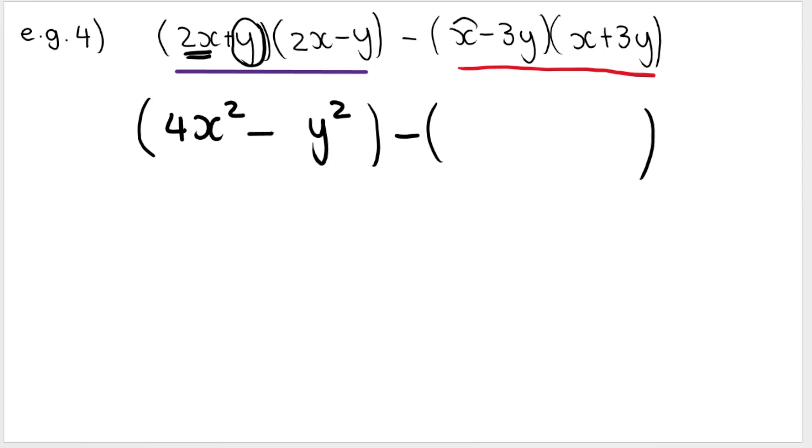Same thing over here. Square the first term. It's going to be x squared. Square the last term. Remember it's 3y. That's what we're squaring. So we're not only squaring the y. It's not only y squared. We're also squaring the three. What's three squared or three times three? Nine. Pop a minus in between, a negative sign.